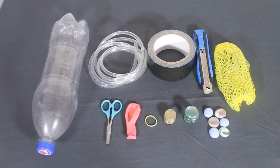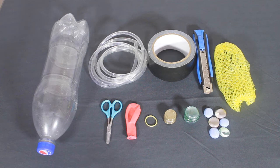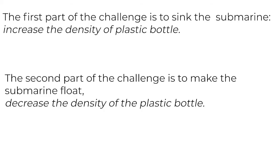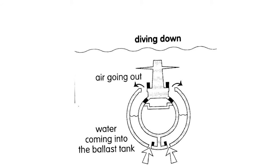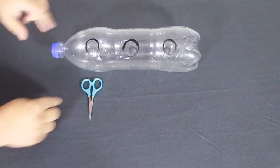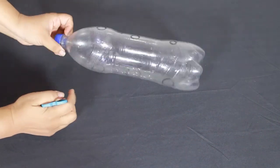The submarine today will be a plastic bottle. The first part of the challenge is to sink the submarine. To make this, we need to increase the density of our plastic bottle. The second part of the challenge is to make the submarine float. For this, we would need to decrease the density of the plastic bottle. How are we going to increase the density of the plastic bottle? We can add weight to the plastic bottle. This weight could be by letting in water and or by adding external weight to it.